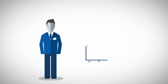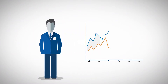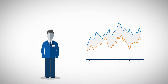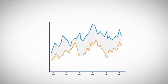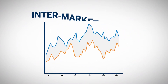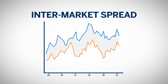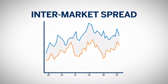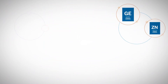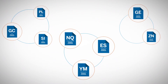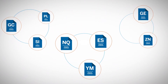A trader can spread between two highly correlated futures contracts of similar but different types. This is known as an intermarket spread. In the financial futures markets, intermarket spreads might involve trading two highly correlated contracts of different types.